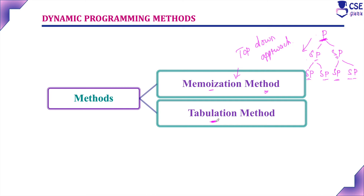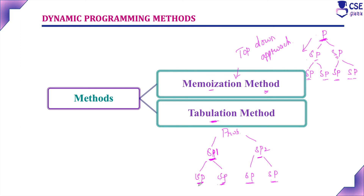The tabulation method solves dynamic programming problems with the help of a table. Initially, it finds the solution for the smallest subproblem and stores the result in a table, then finds the solution for the next smallest subproblem and stores it. The procedure continues — once solutions for the smallest subproblems are found, the solution for higher-level subproblems is obtained, and finally the solution for the main problem. This approach starts from the smallest subproblem and proceeds upward, starting from the bottom and moving towards the top — it is otherwise called the bottom-up approach.